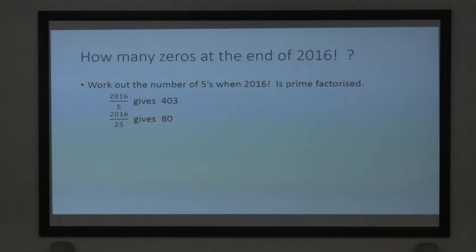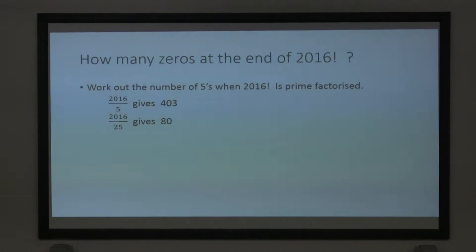Alright, so we've got the number of fives from 2016, so if you divide by five, it gives you the total number of multiples of five. Okay, so that's 403. But if you divide by 25, that gives you 80 multiples of 25.